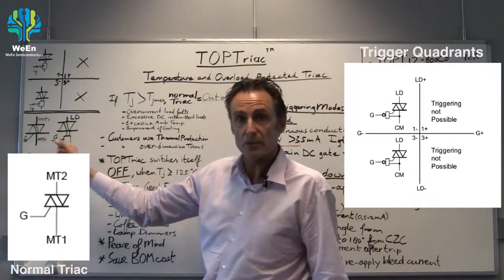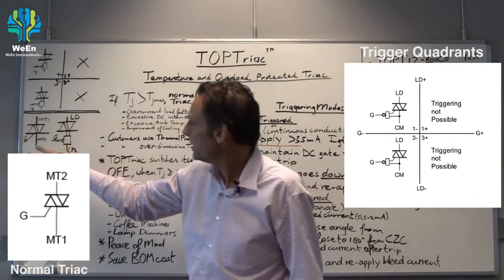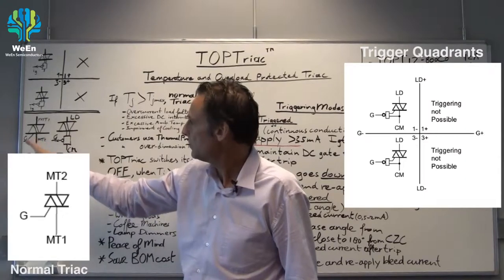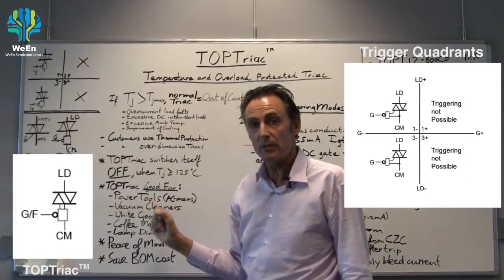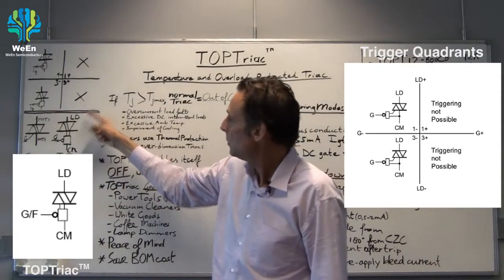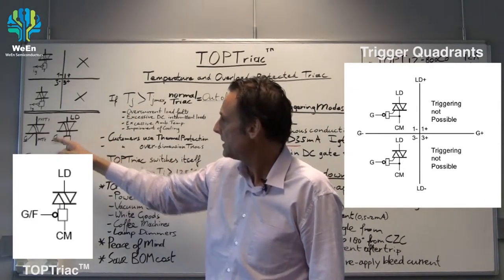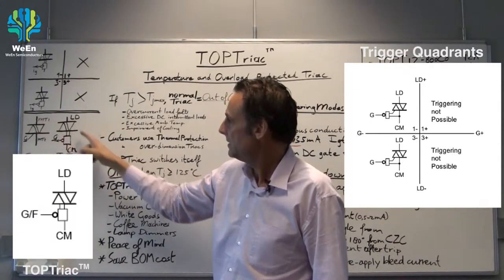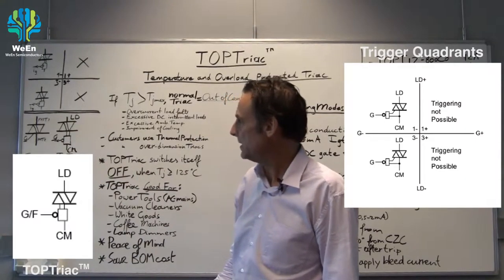This is the symbol of a normal TRIAC, can be a four or a three quadrant TRIAC: main terminal 1, main terminal 2, and gate. This is the symbol of a TOP TRIAC: load, common, and gate. Here you see the additional functionality that we built in.